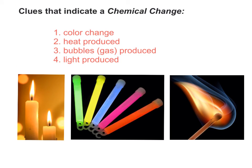The last clue to a chemical change is light produced. Before we had heat produced — not every time you have heat do you have light being produced, but some examples have both clues. On the left, we have candles burning, so obviously light is produced. On the right, we again have the match producing fire, which is producing light. In the middle, we have glow sticks — you have to crack them, and when you crack them, you're allowing the chemicals to mix together, producing that fluorescent light that allows it to glow in the dark. That is definitely a chemical change because it is producing light where before it was not. Please hit pause and add to your notes the last clue to indicate a chemical change.